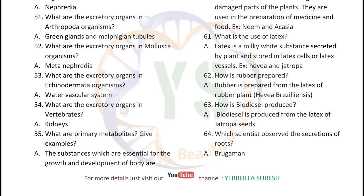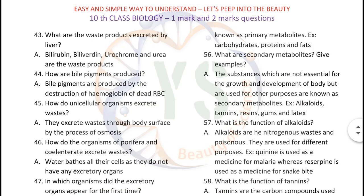What are primary metabolites? Give examples. The substances which are essential for growth and development of the body are known as primary metabolites, e.g., carbohydrates, proteins, and fats. What are secondary metabolites? Give examples. The substances which are not essential for growth and development of the body but are used for other purposes are known as secondary metabolites, e.g., alkaloids, tannins, resins, gums, and latex.